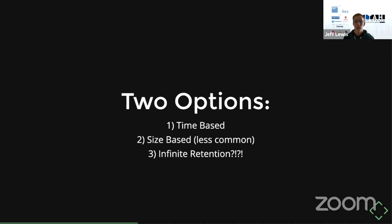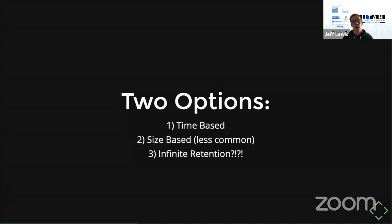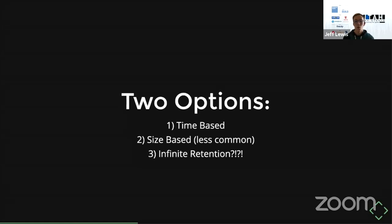The second option is size-based, where you provide a number of bytes a topic is allowed to take up. Once it gets over that limit, it starts deleting the oldest messages until you're back under that limit. Size-based is less common because it can be hard to predict how long it'll take for a topic to reach that size, making it difficult to understand how long records will be available. Time-based is definitely more common.